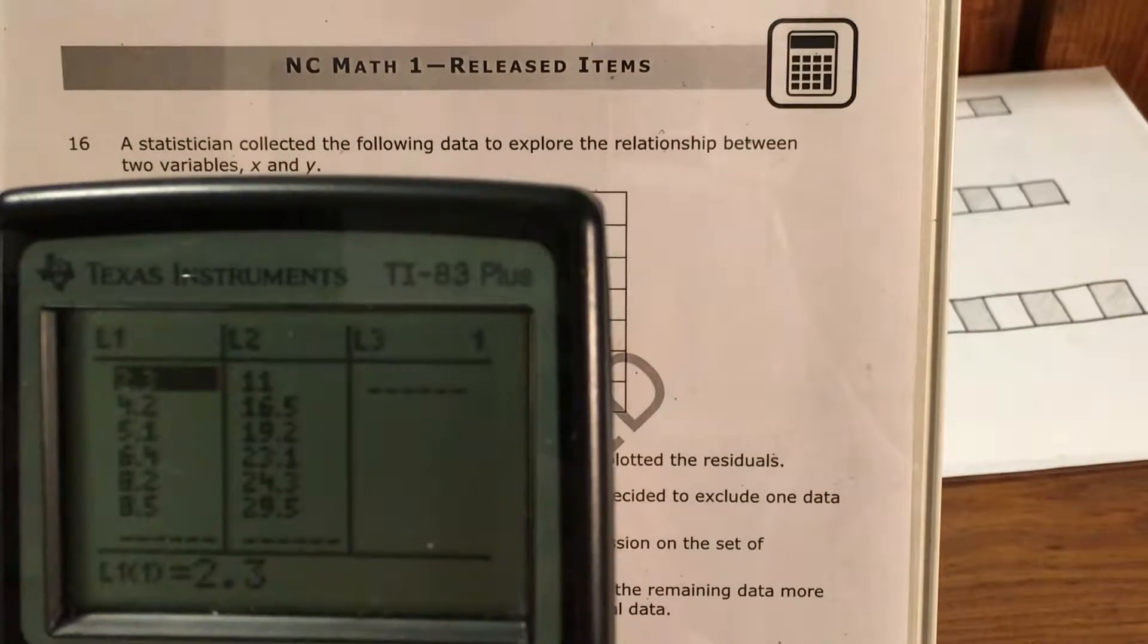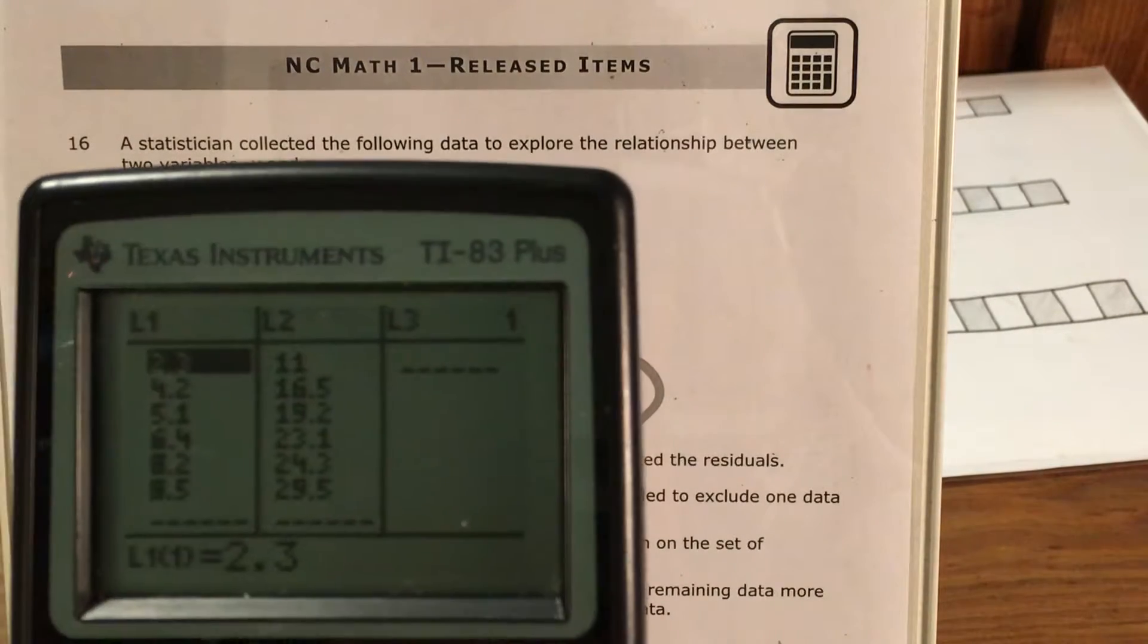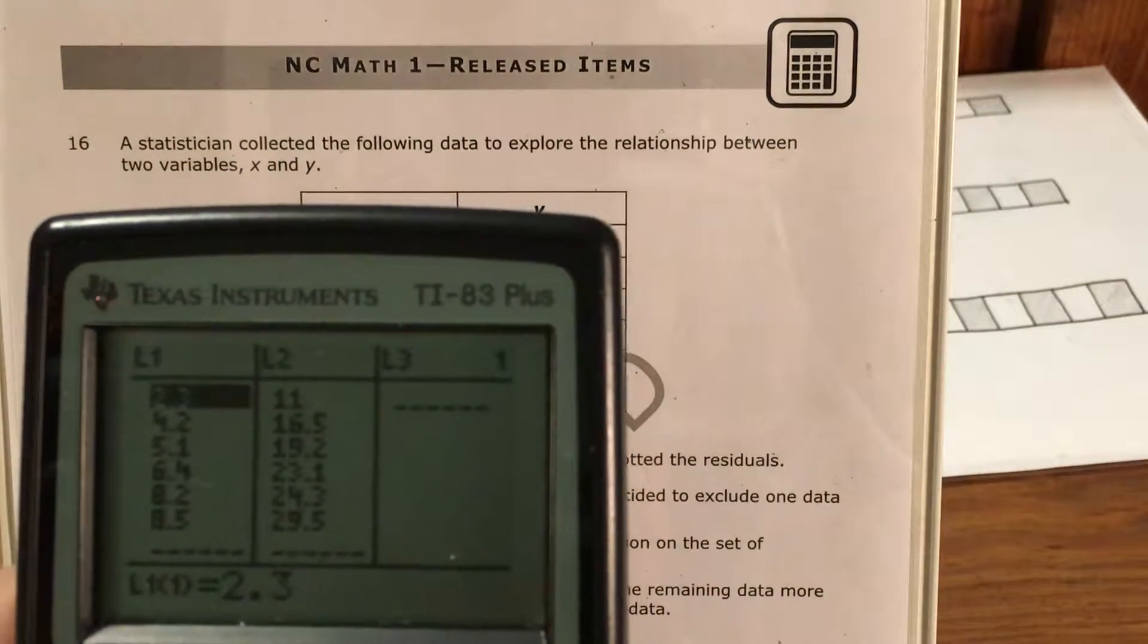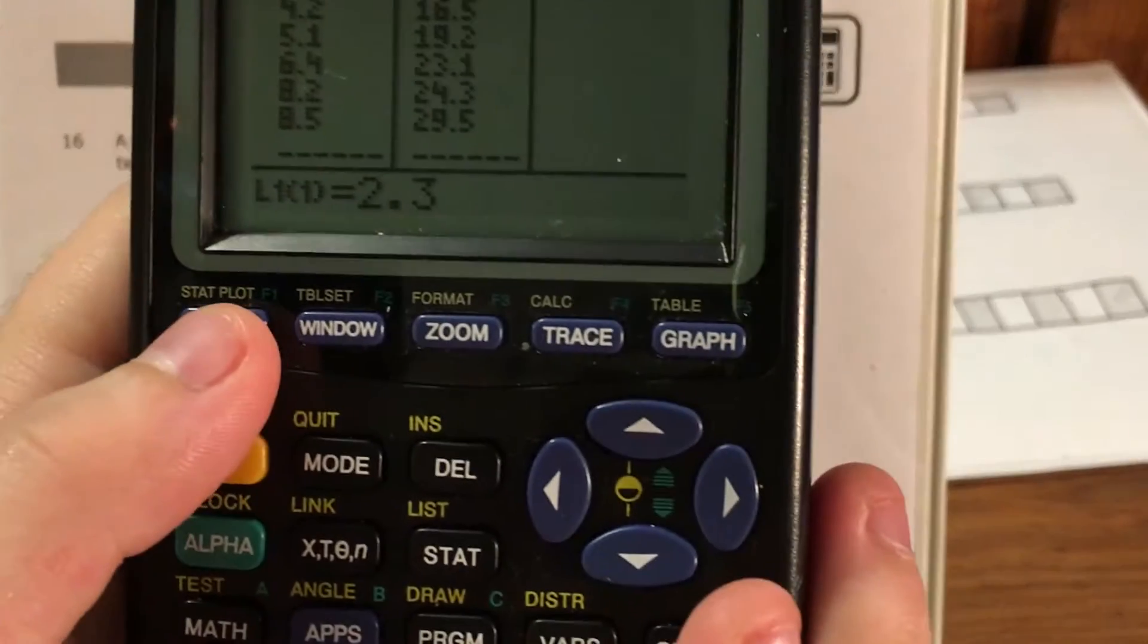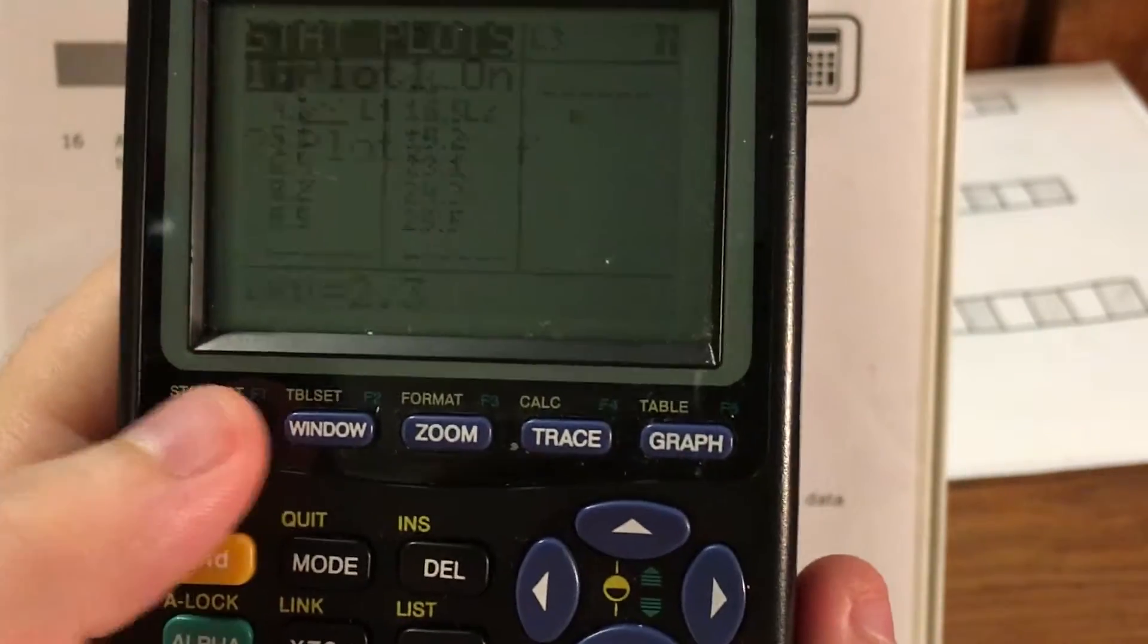And so the next thing I need to do is we can do this a numbers way or we can do it a graphing way. And in order to do it the graphing way, I'm going to look above y equals where it says stat plot. I'll press second stat plot.